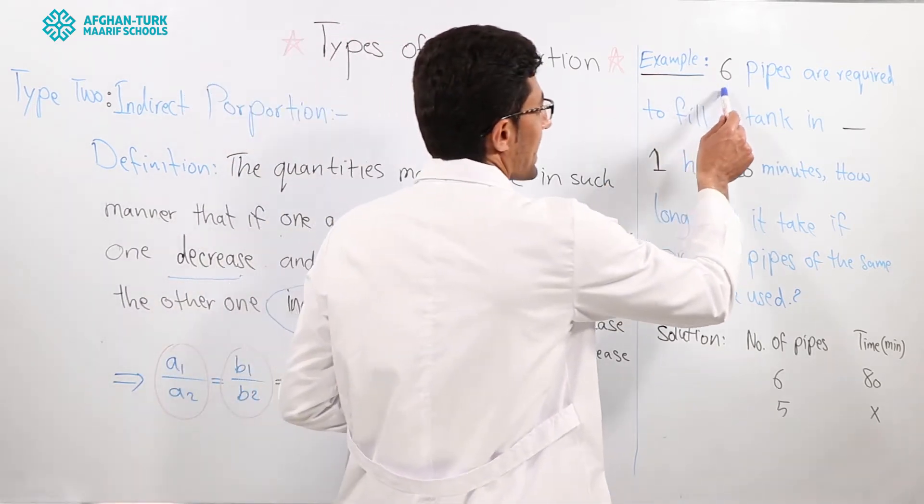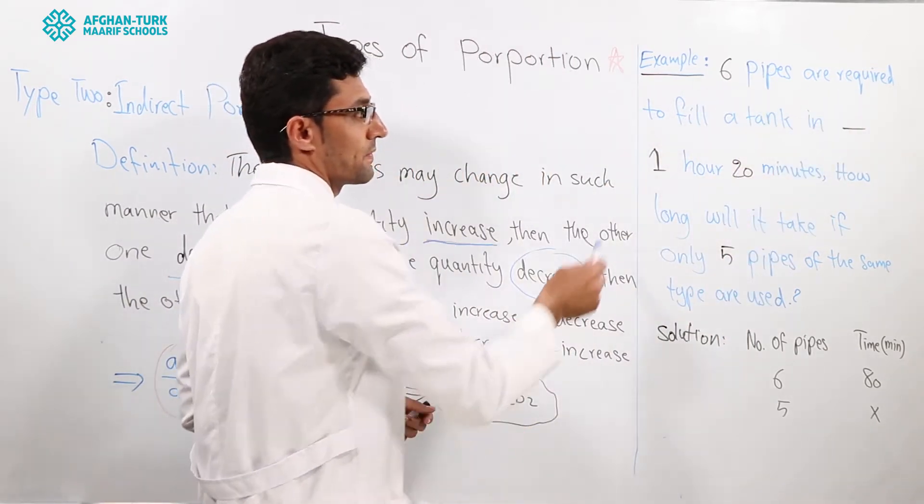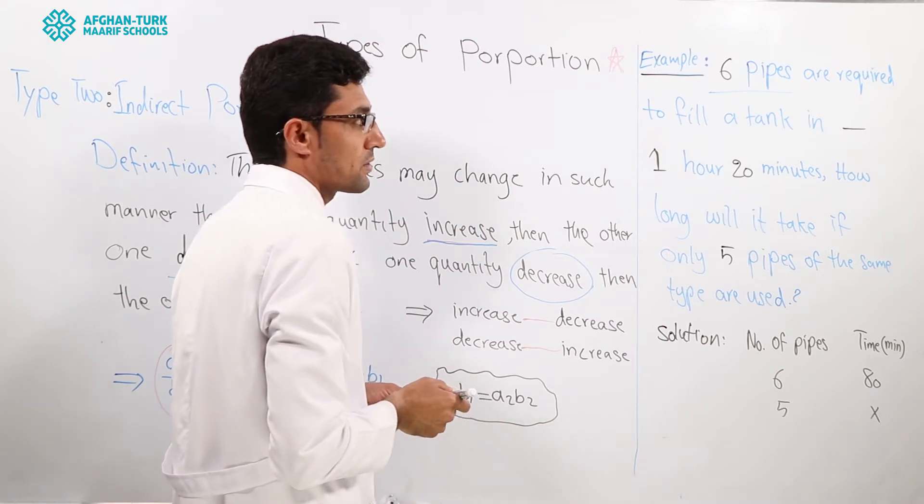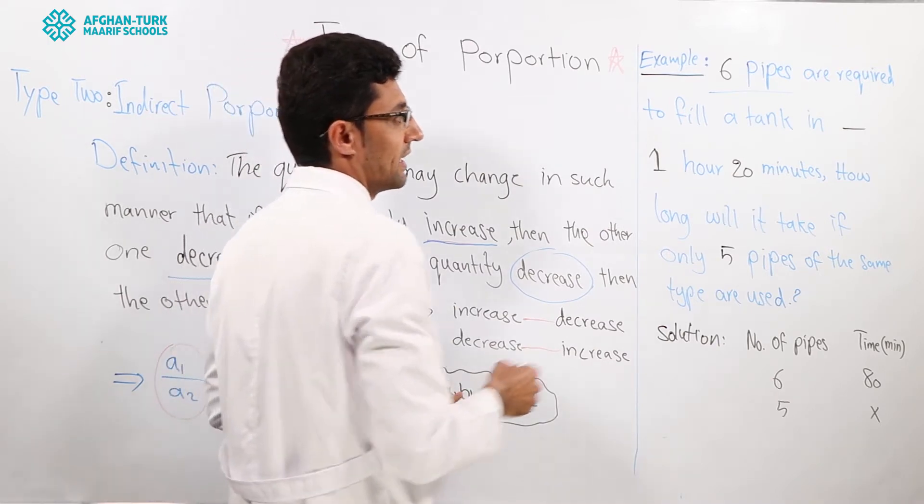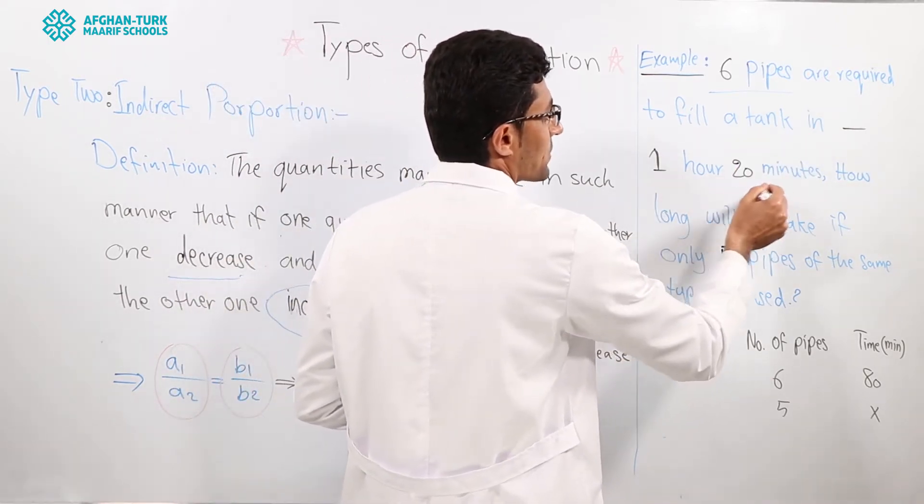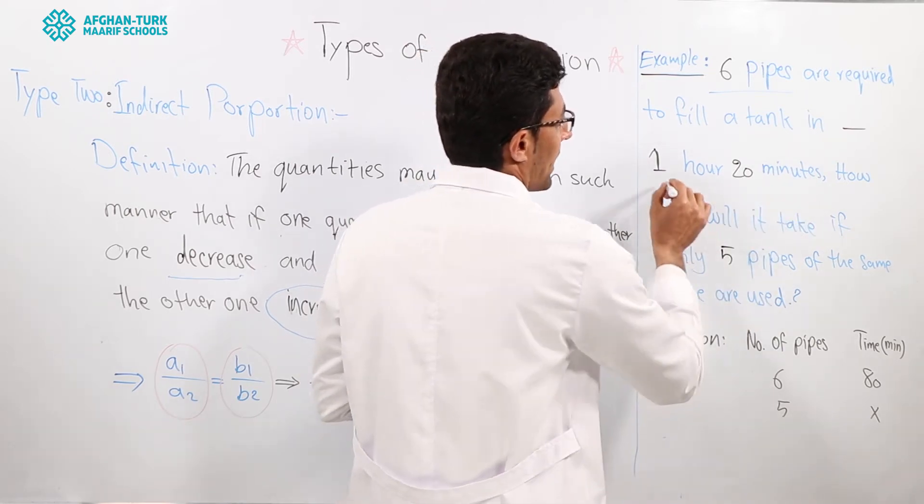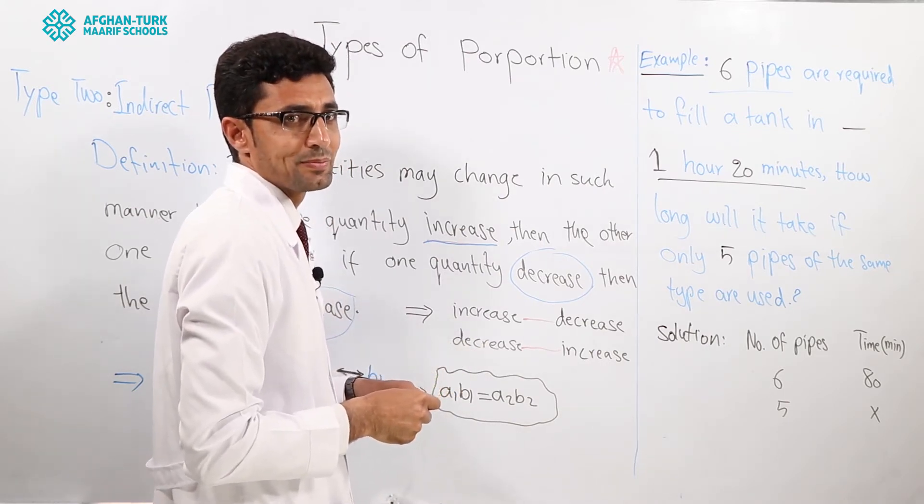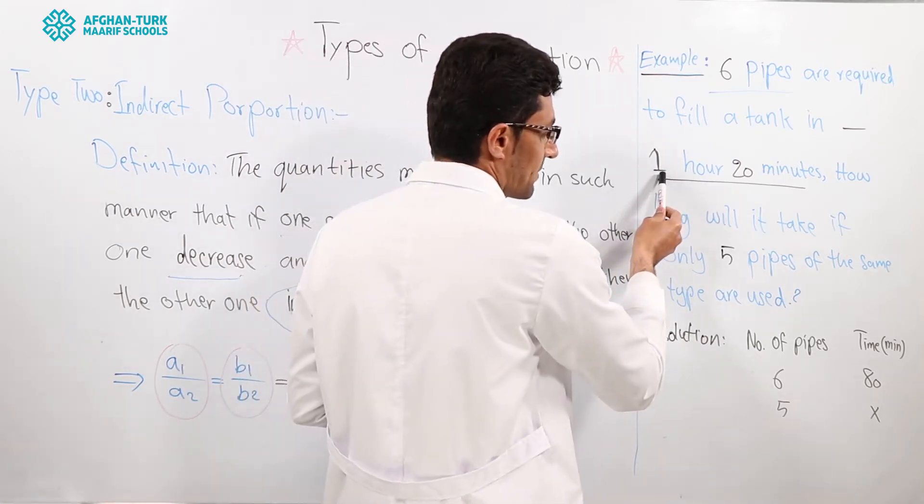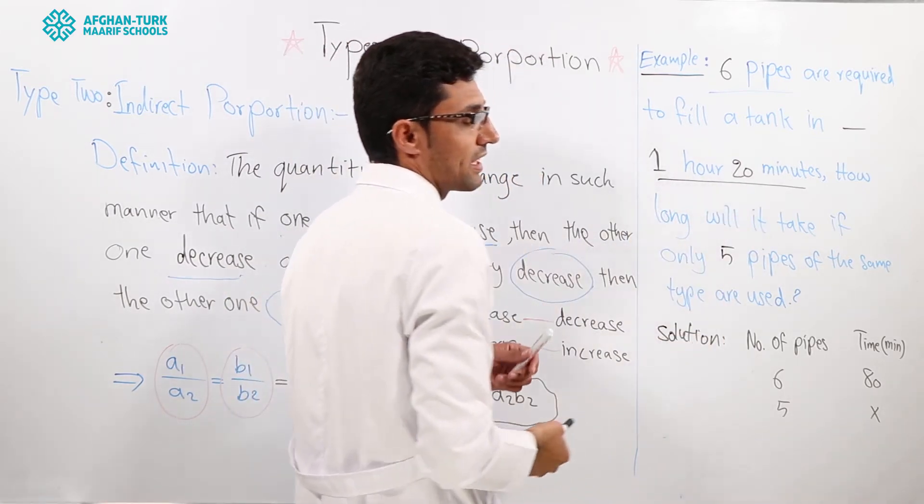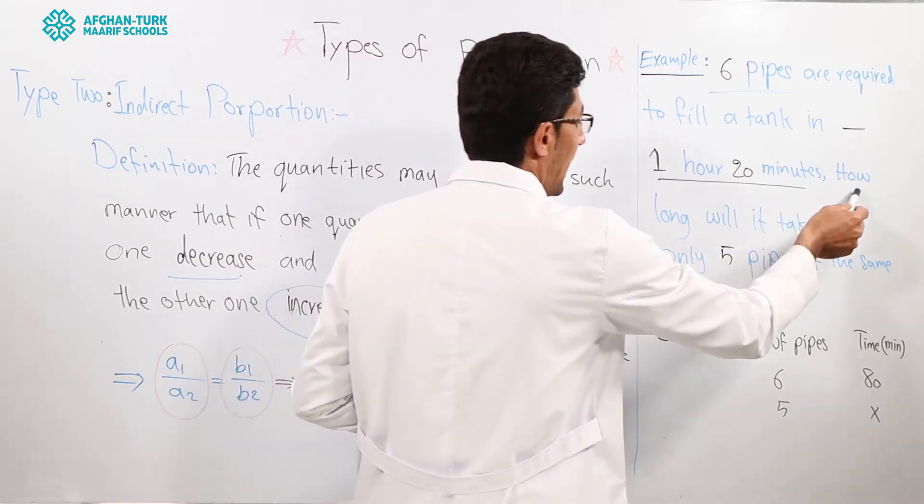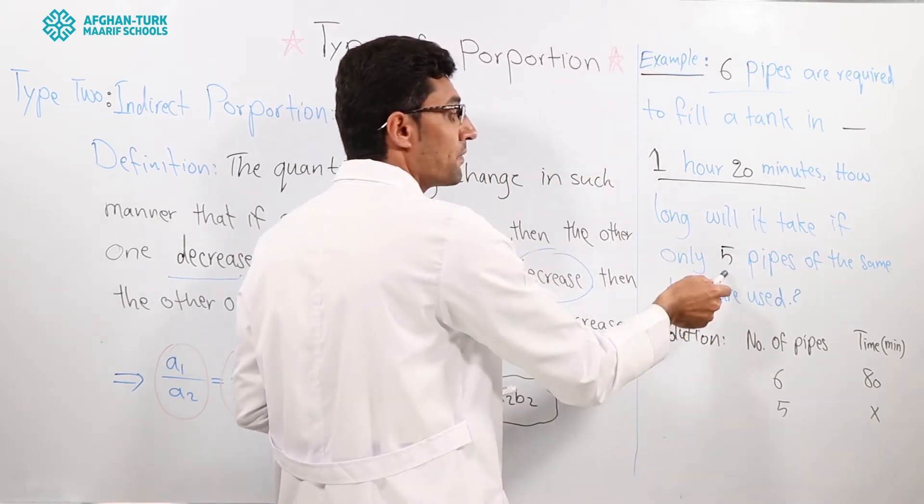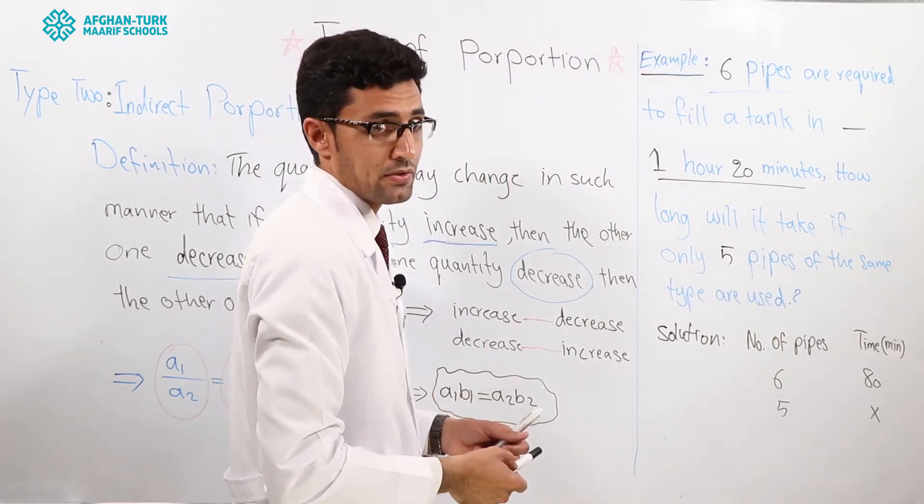Six pipes are required to fill a tank in one hour twenty minutes. How much is one hour twenty minutes? 80 minutes, yeah. One hour is 60 minutes and 20 minutes added should be 80 minutes. How long will it take if only five pipes of the same type are used?